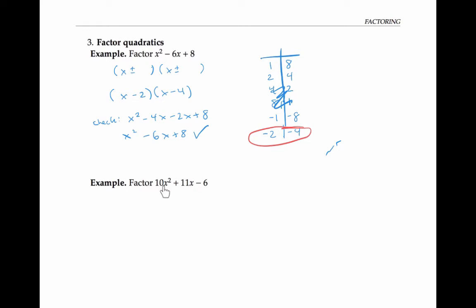The second example is a bit more complicated because now my leading coefficient — my coefficient of x squared — is not just one, it's the number 10. There are lots of different methods for approaching a problem like this. I'm going to show my favorite method, which uses factoring by grouping. To start out, I'm going to multiply my coefficient of x squared by my constant term: 10 times negative six gives me negative 60. I'll also take my coefficient of x, the number 11, and write that down.